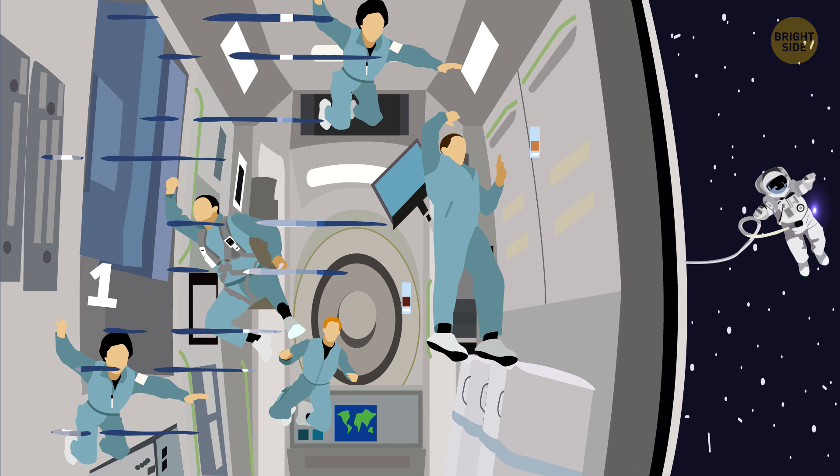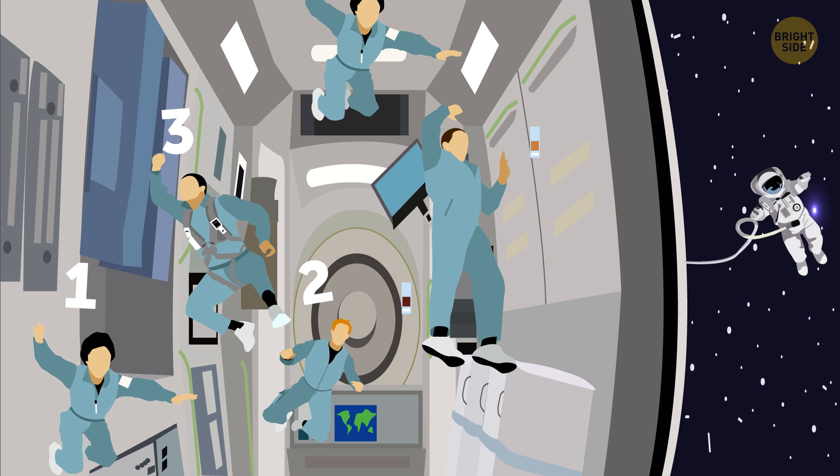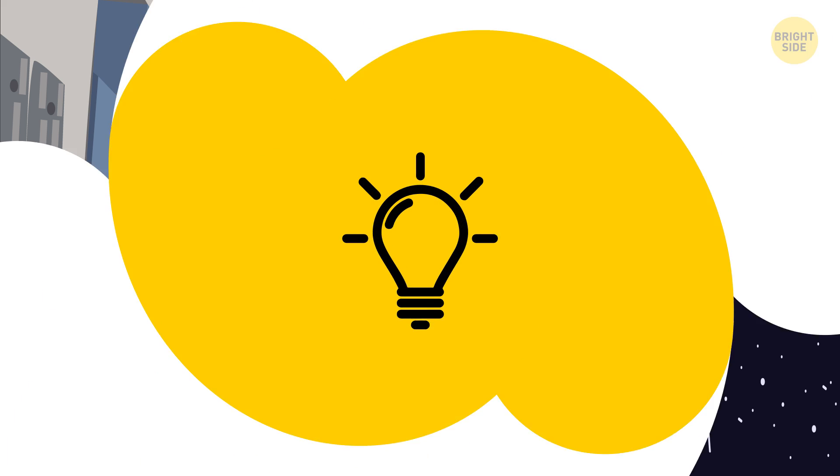The ISS crew usually consists of six. So, to make up the difference, oxygen is delivered from Earth.